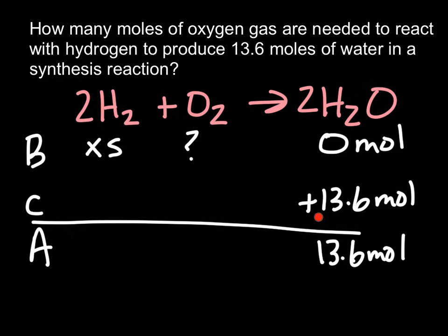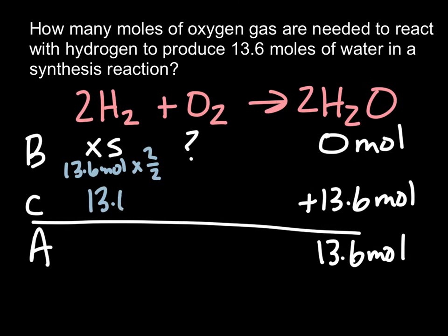From the change in water we can use the coefficients to figure out how each of the other ones changed. I'm going to do a factor-label calculation. Starting with 13.6 moles of water, I multiply by the ratio from the coefficients. I want to find hydrogen and I'm coming from water, so I put 2 over 2. That's an even ratio — 2 to 2 is the same as 1 to 1 — so I know I'm going to use 13.6 moles. I put a minus because this is a reactant and reactants get used up, so hydrogen changes by −13.6 moles.